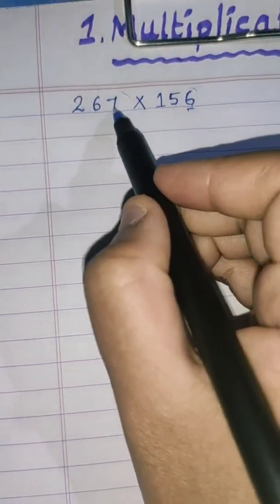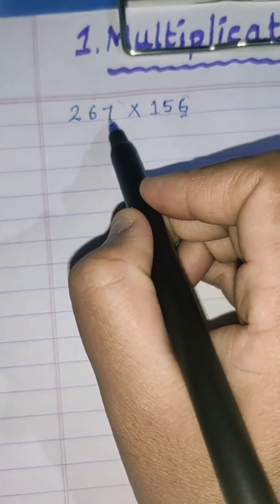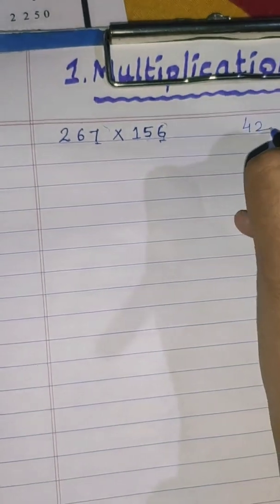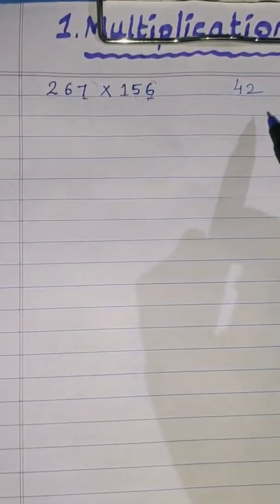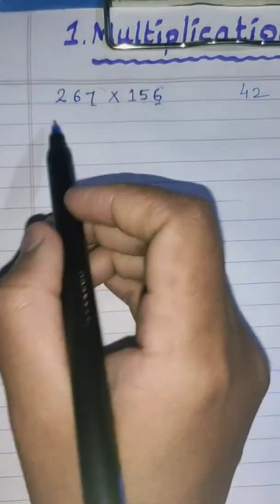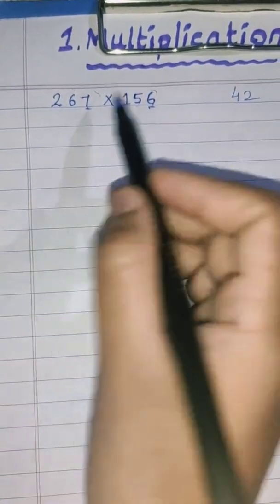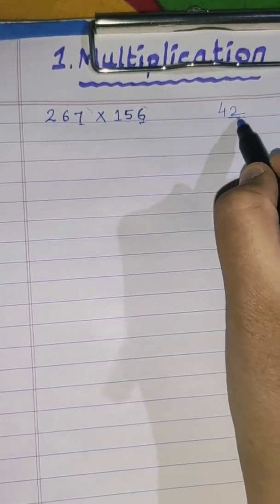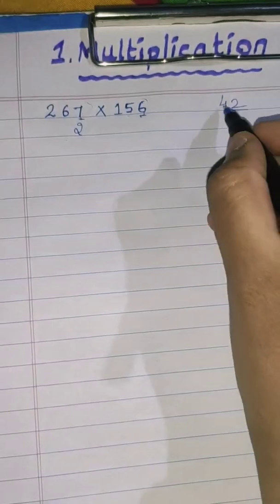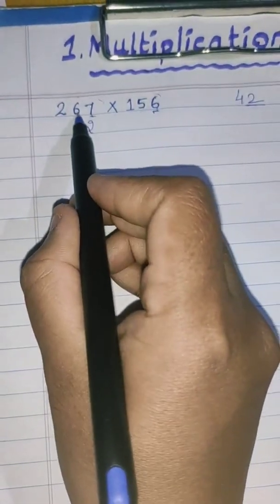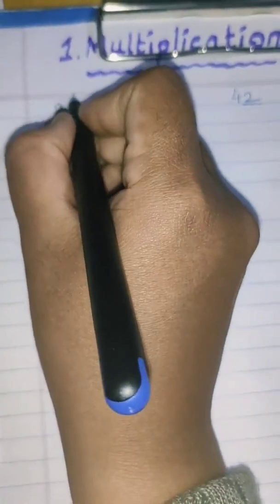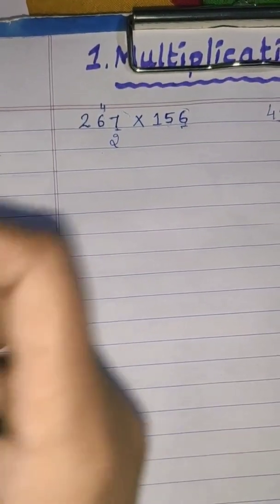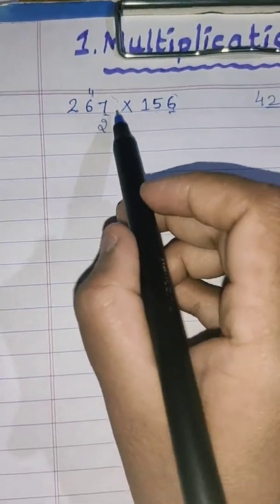Starting with 6 in the unit place: 6 sevens are 42. We write 2 in the unit place and carry over 4 to the tens place. Next, 6 sixes are 36, plus carry 4 equals 40. We write 0 and carry over 4. Then, 6 twos are 12, plus carry 4 equals 16. Since there is no more digit, we write 16 directly. We have completed the first partial product.